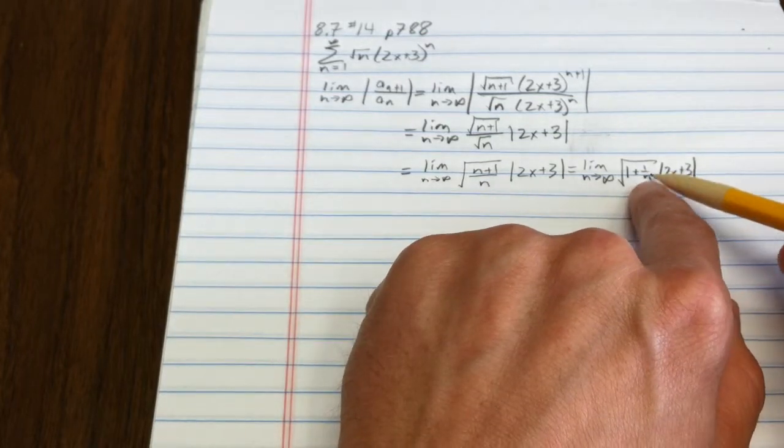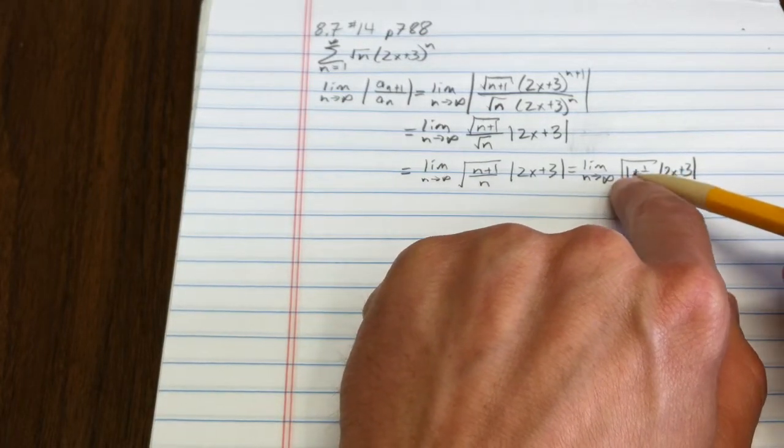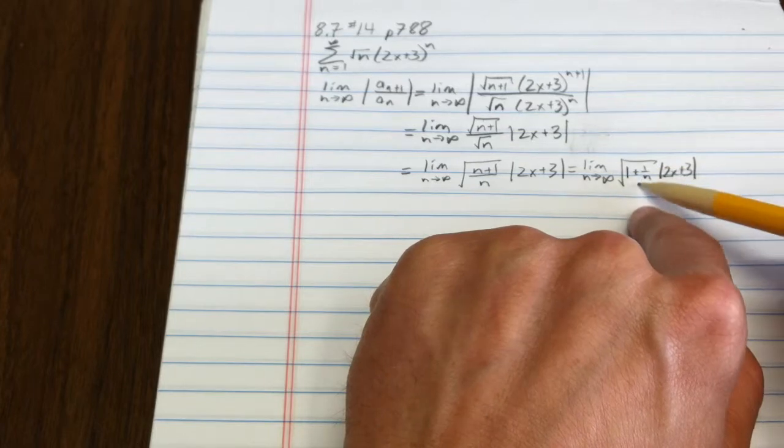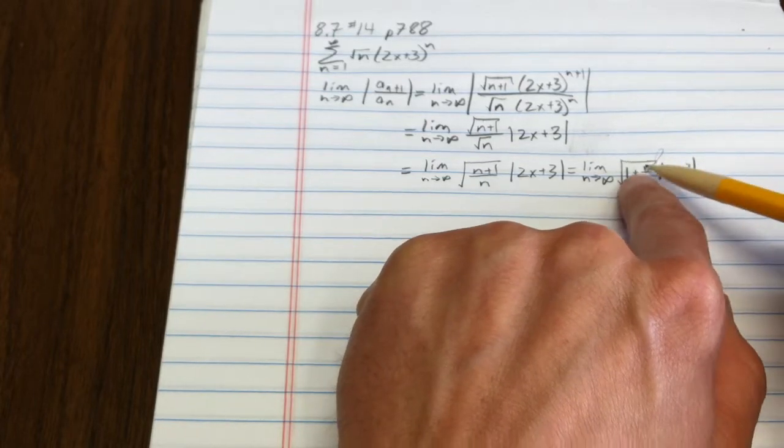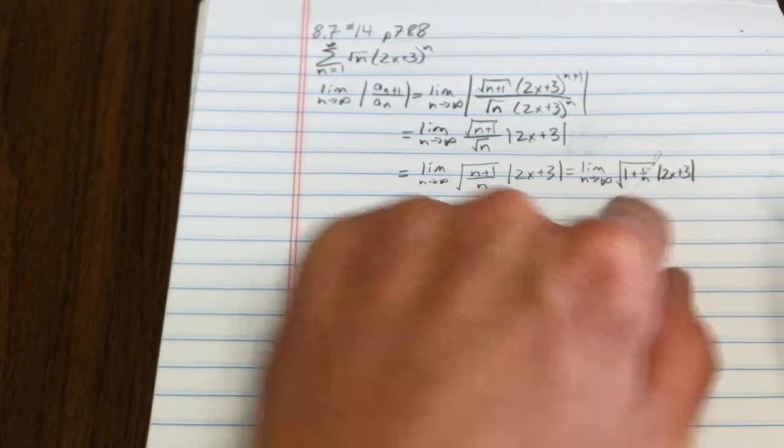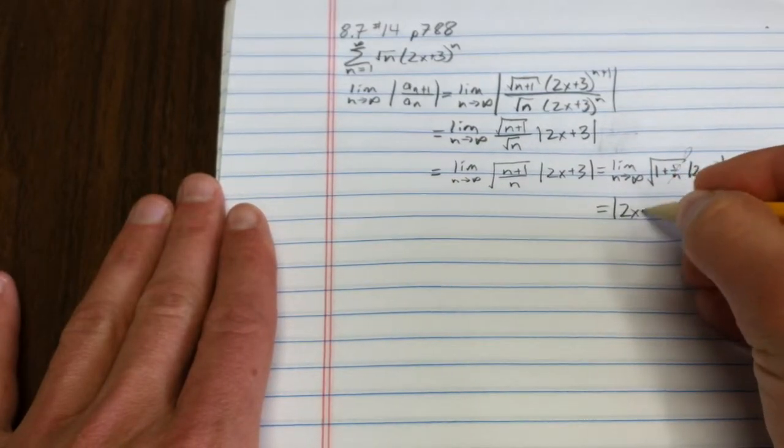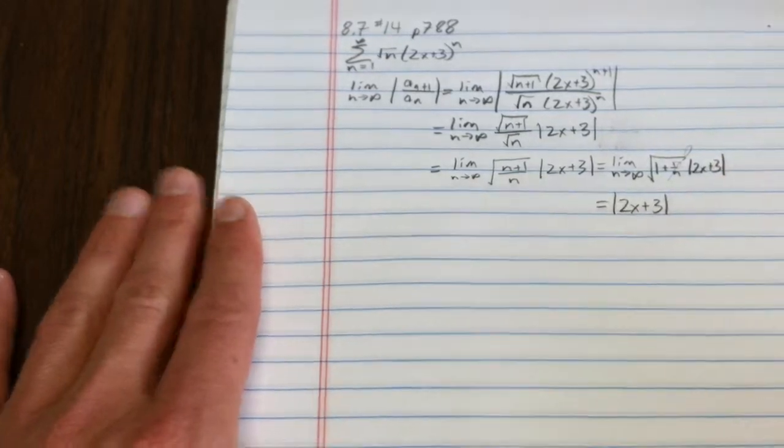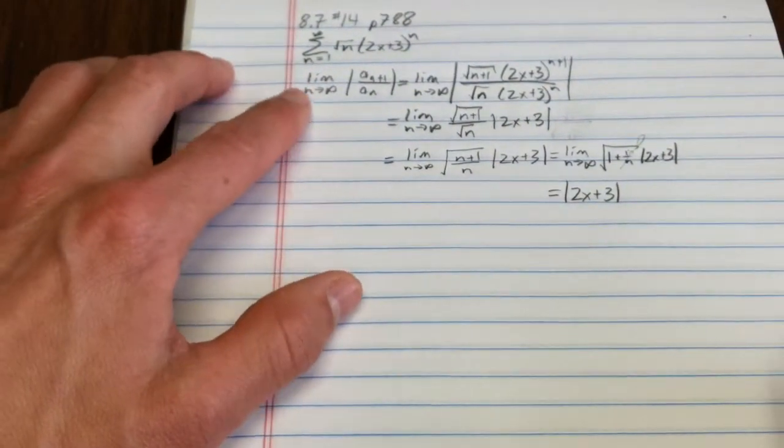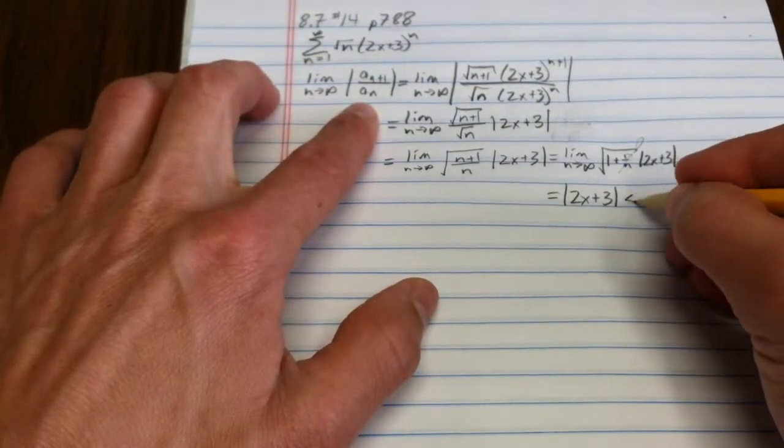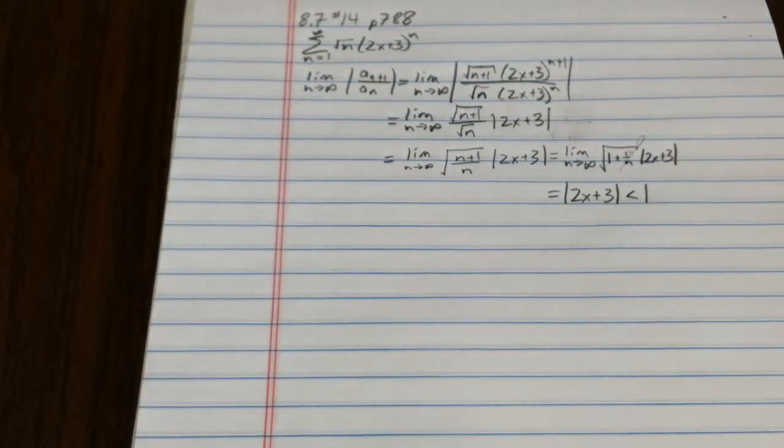Now here, notice that the limit as n goes to infinity doesn't affect the 1 at all, but this piece goes to 0. We have the square root of 1, which is 1, and so this whole piece goes to the absolute value of 2x plus 3. Now when does that converge absolutely? That converges absolutely as long as that's less than 1.